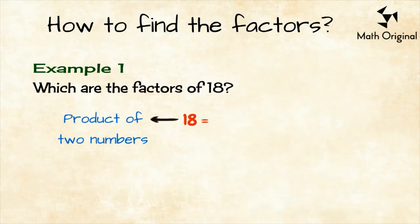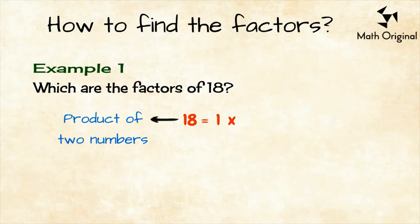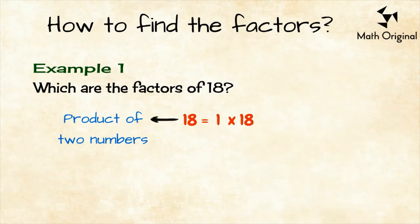Recall from the facts, since 1 is the smallest factor of any number and the number itself is the largest, then the first product is always 1 times the number itself. In this case, 18 equals 1 by 18.